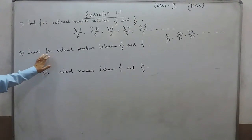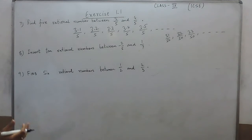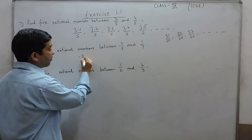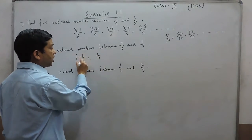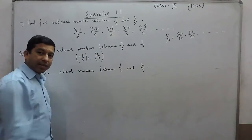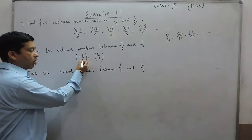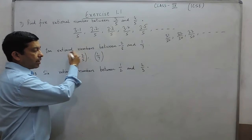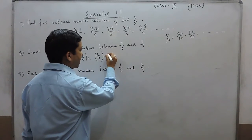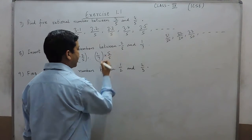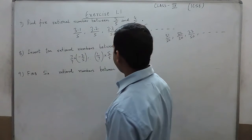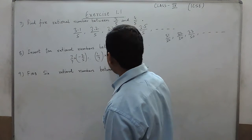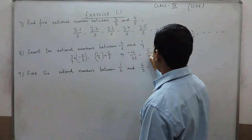Next: insert 10 rational numbers between -2/5 and 1/7. The important thing here is we have to equate the denominators. The denominator here is 5 and here it is 7. If I multiply by 7/7 in this rational number and by 5/5 in this rational number, we get -14/35 and 5/35.